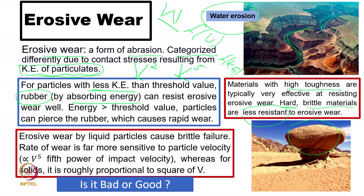For particles with kinetic energy below a threshold, rubber resists erosive wear effectively. However, if energy exceeds the threshold, rubber will tear away and cause more rapid wear. We need to know each elastomer's threshold limit — how much energy it can absorb — since different rubber materials and elastomers have different threshold limits. Rubber coatings of just a few millimeters can provide a good system design solution.